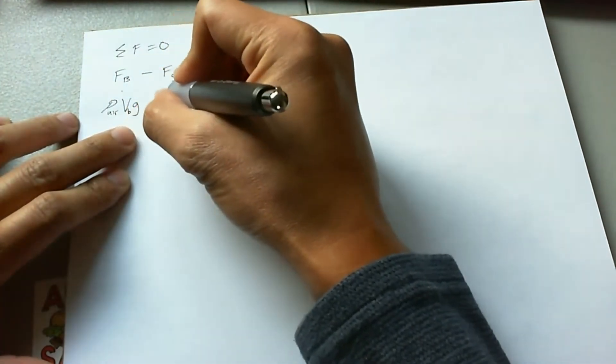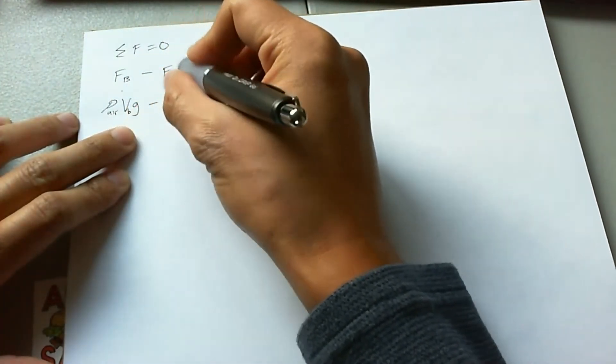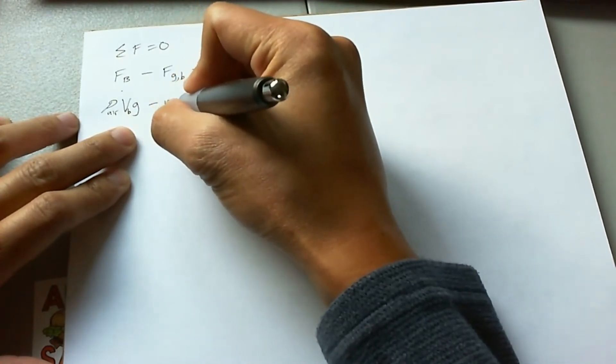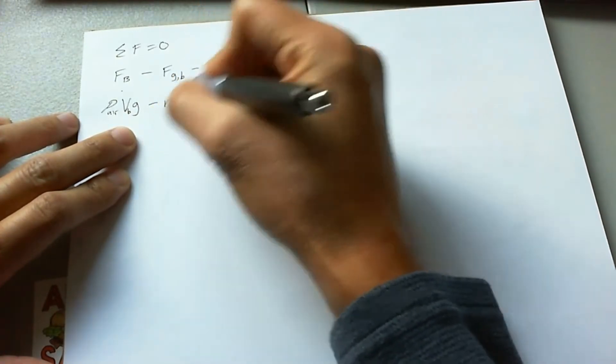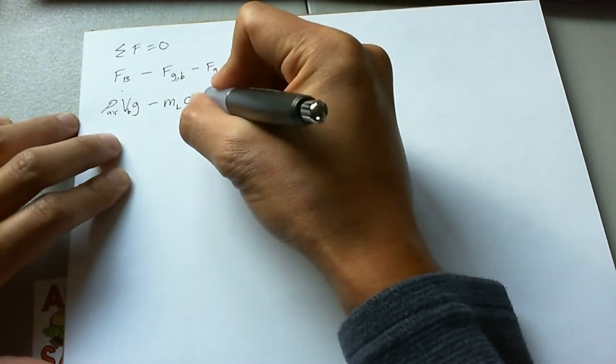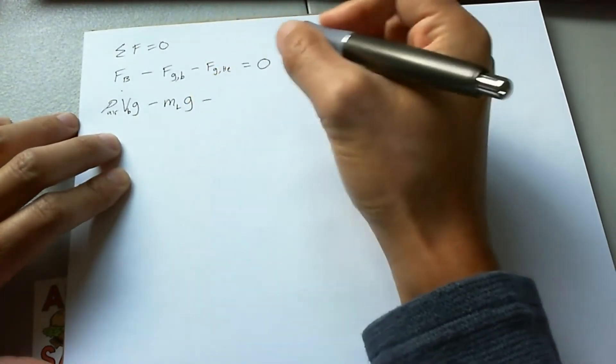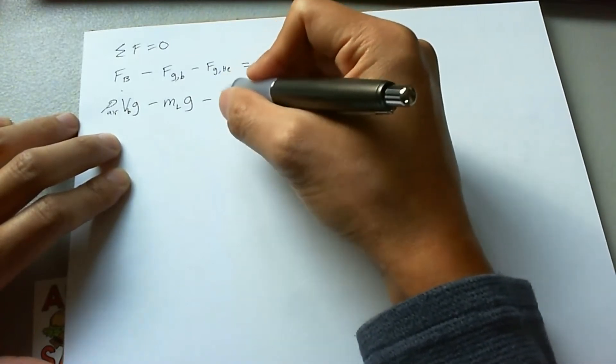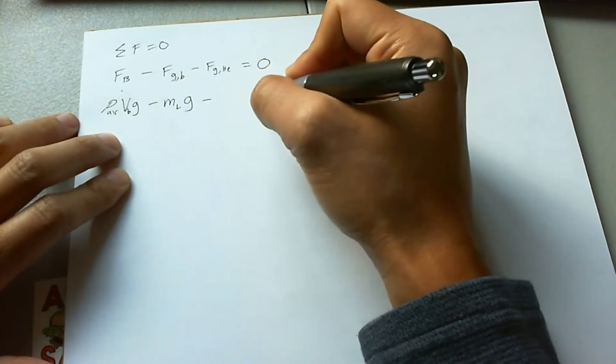Then we're going to go ahead and say minus the force of gravity of the balloon. That's going to be the mass of the load times G. And we're going to also say minus the force of gravity of the helium inside. So we can say that the mass of the helium times G, but we really don't know anything about the mass.